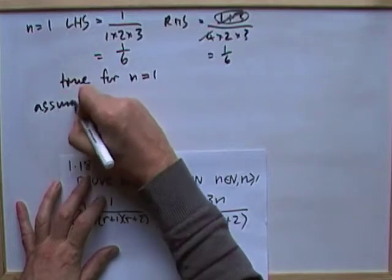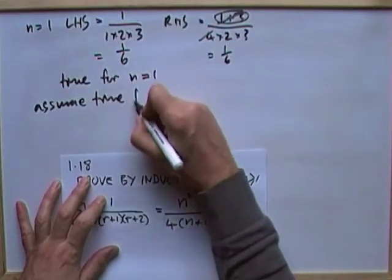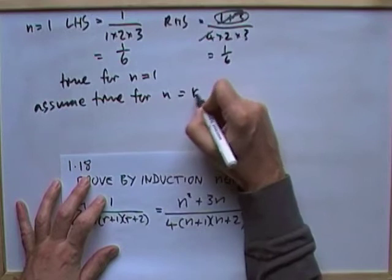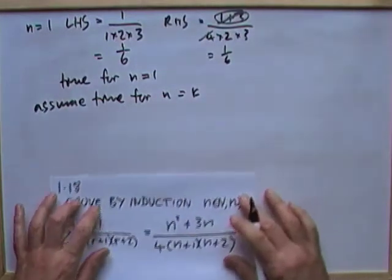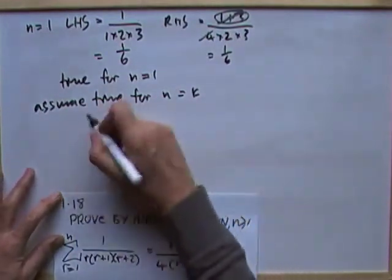Next, assume. Assume it's true for n equals any arbitrary number k. If that's the case, now we have to write all this out.